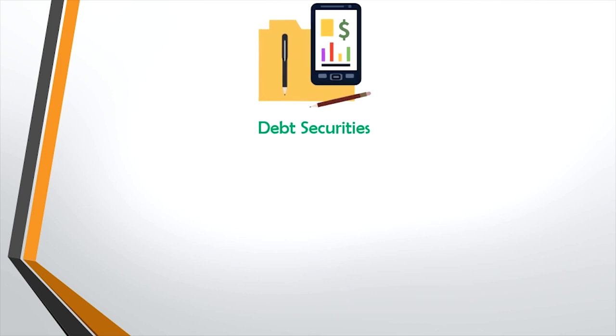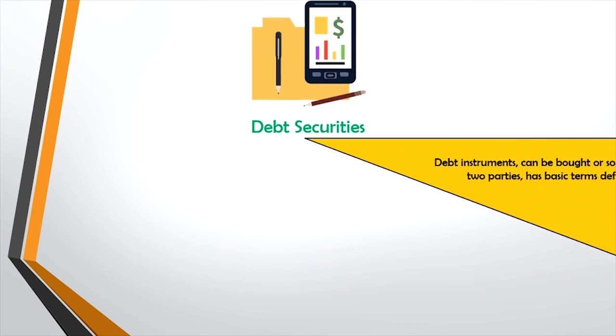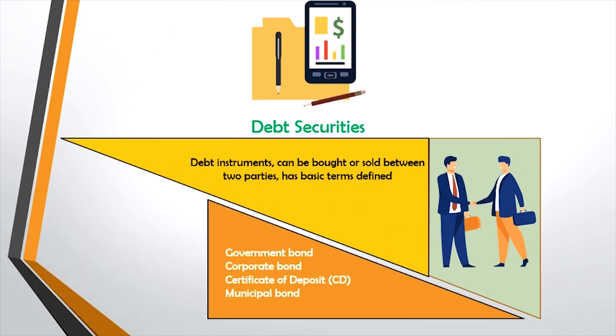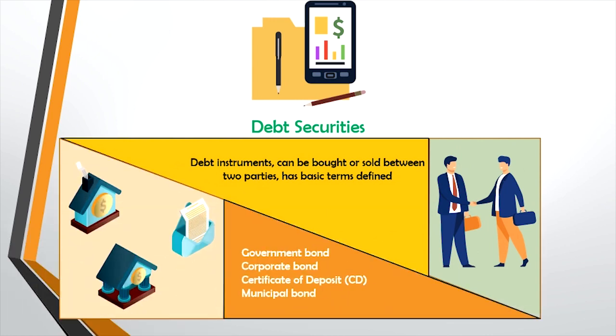Debt securities are debt instruments that can be bought or sold between two parties and have basic terms defined, such as the notional amount, the amount borrowed, interest rate, and maturity and renewal date. Some examples of debt securities include government bond, corporate bond, certificate of deposit (CD), and municipal bond.